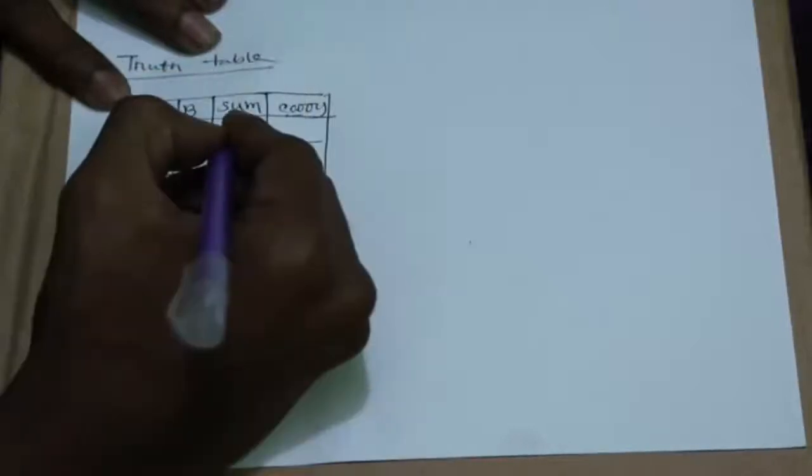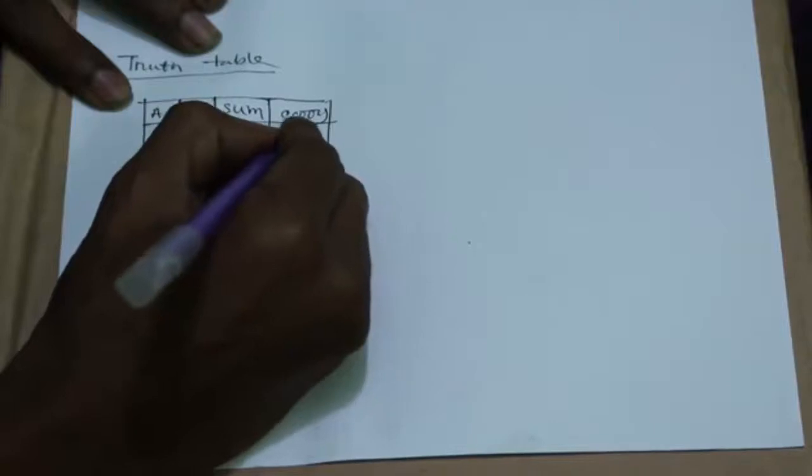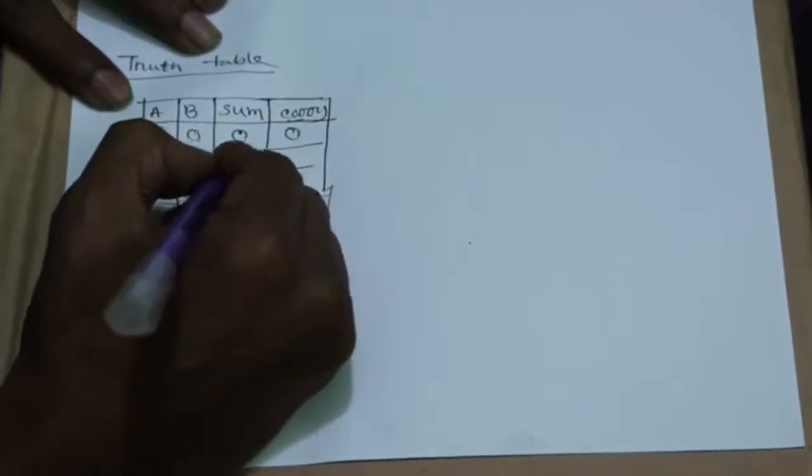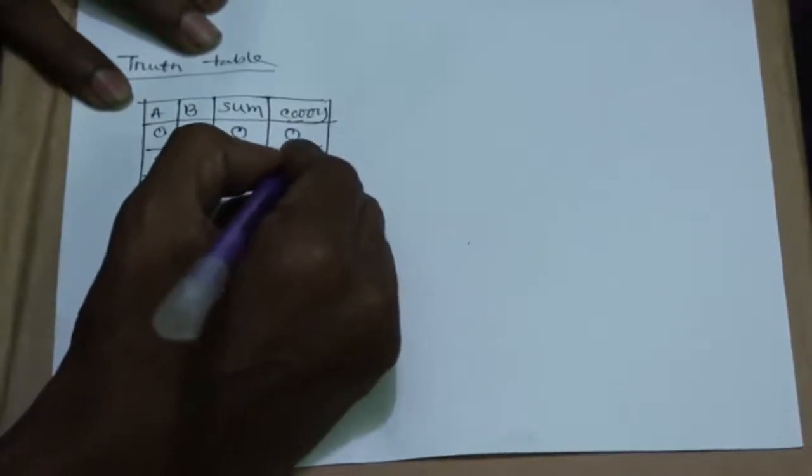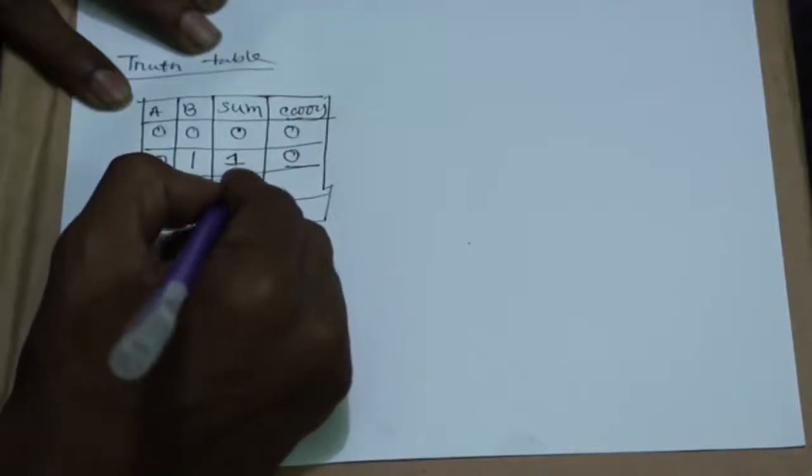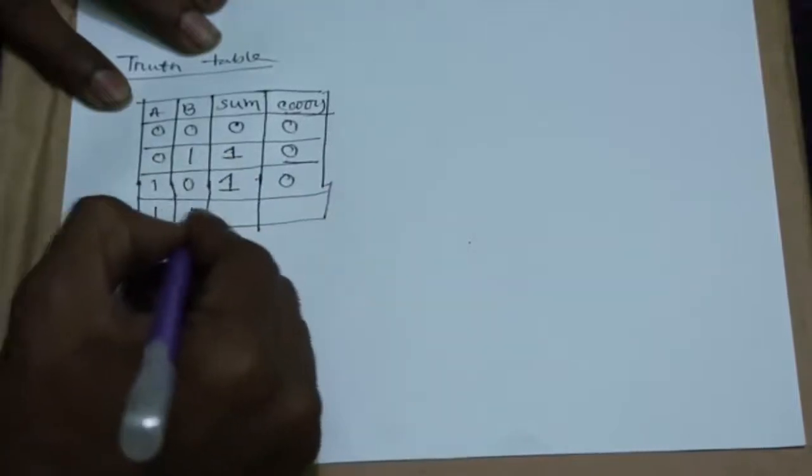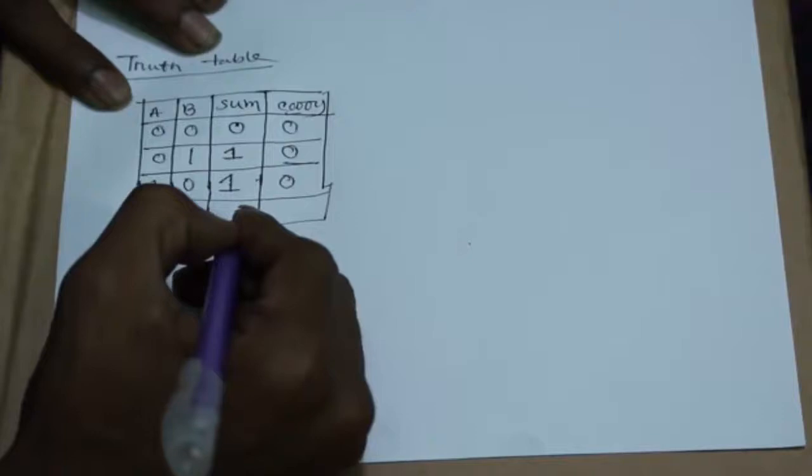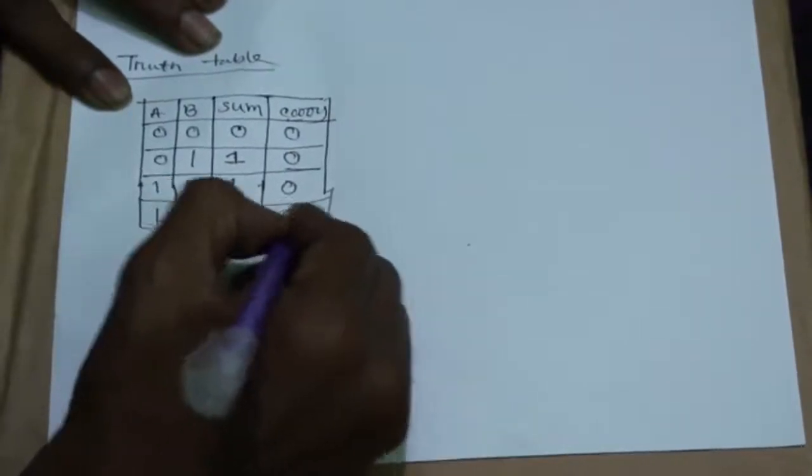Now, 0 plus 0 equals 0. So SUM is 0 and CARRY is 0. 0 plus 1 equals 1 which is the SUM value and there is no CARRY, so CARRY is 0. Again, 1 plus 0 equals 1. So SUM is 1 and CARRY is 0. Now, 1 plus 1 equals 1, 0 and here SUM is 0 and CARRY is 1.